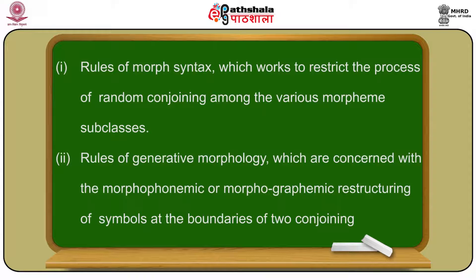There are a large number of constraints normally used in the construction of words. Second, rules of generative morphology, which are concerned with the morphophonemic or morphographemic structuring of symbols at the boundaries of conjoining morphemes. When a suffix and stem combine, a new structure can be generated that was not present inside the combining members — there is a generative aspect embedded into morphological analysis.